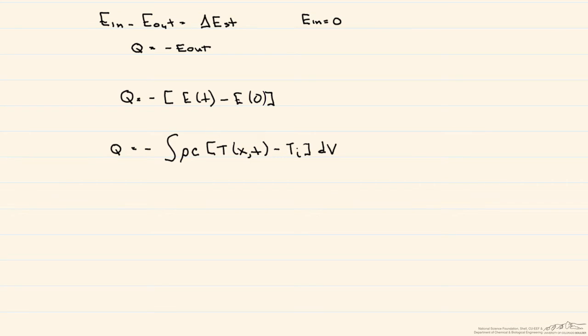So we now normalize this Q by introducing Q sub zero, which is that rho times the C times the volume times Ti minus T infinity. And so this Q zero is considered the maximum amount of energy transfer that could occur. One way to look at it is that Ti minus T infinity is the largest possible change in temperature that we could get.